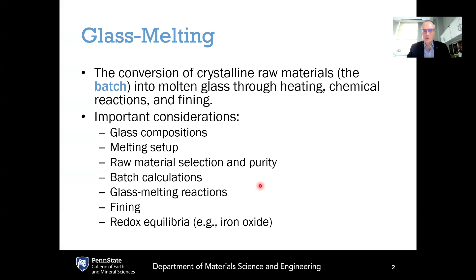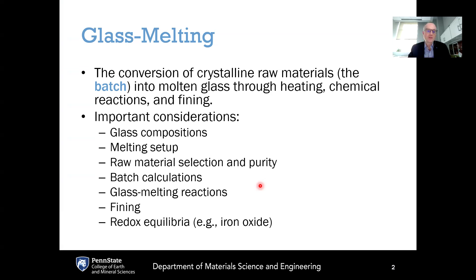It all starts with glass melting. So getting our batch materials, having them mixed, and then converting them from their crystalline raw material state — this batch — into molten glass. This is done through heating of the batch, as well as chemical reactions and fining that occur during the batch-to-melt conversion process. Fining is just removal of bubbles, because in some cases batch materials will evolve gases as they are melted, and the fining process indicates removal of those bubbles.